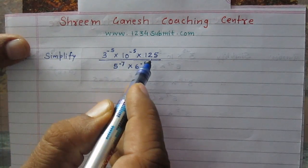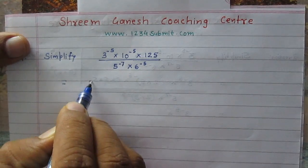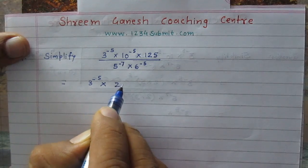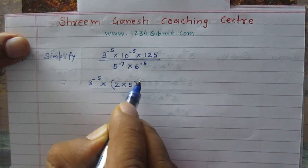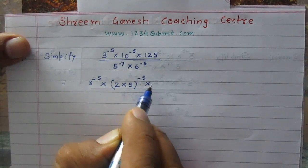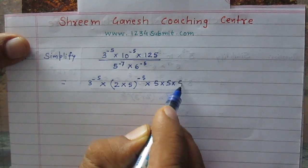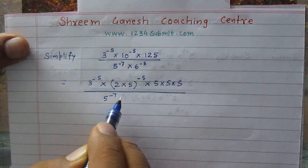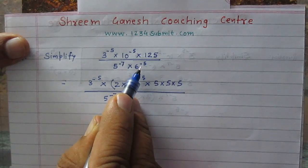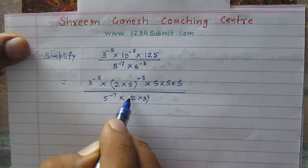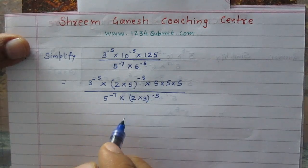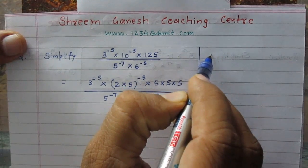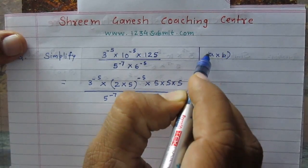First we will factorize 10, 125, and 6. In the numerator, write 3 raised to power minus 5. Then 10 raised to power minus 5 can be written as 2 multiplied by 5, raised to power minus 5. And 125 can be written as 5 multiplied by 5 multiplied by 5. In the denominator, 5 raised to power minus 7 stays, and instead of 6 raised to power minus 5, write 2 multiplied by 3, raised to power minus 5, because 2 times 3 equals 6.